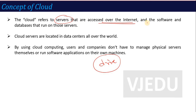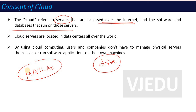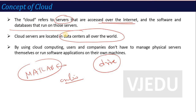Cloud refers to the servers accessed over the internet and the software and databases that run on those servers. For example, I want to run some software — I do not directly install it on my system, I run it on a particular web address. Take MATLAB as a simple example: MATLAB is an exe file you install in your system, but there is also online availability where you can access it directly. That server which you are accessing through the internet — that is the role of cloud. Cloud servers storing data are available all over the world, and by using cloud computing, companies and users don't have to manage the physical servers themselves.